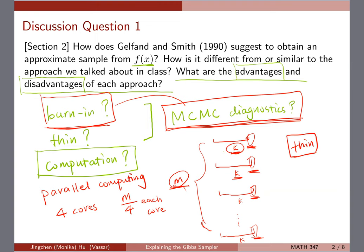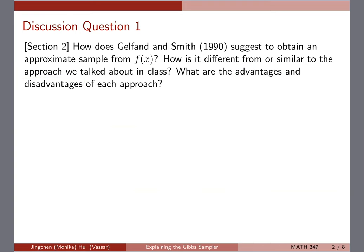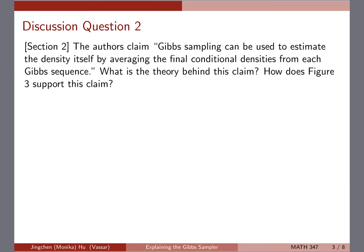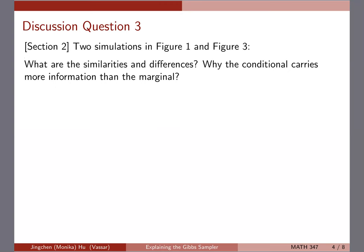That's for question one. Questions two and three are pretty related to each other. Question two asks: the authors claim a sample can be used to estimate the density itself by averaging the final conditional density from each chain — what's the theory behind this claim? And then: how does figure three support this claim? Question three asks you to compare figures one and three — similarities, differences, and why the conditional carries more information than the marginal. I'll give you a few more minutes to discuss, then bring the two plots up on screen.